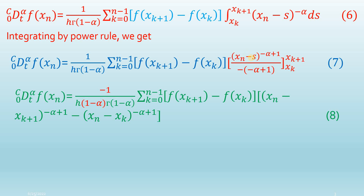The denominator (minus alpha + 1) is taken outside, the minus goes into the numerator, and (1 minus alpha) remains in the denominator. Then I applied the fundamental theorem of calculus: the upper limit x_{k+1} and lower limit x_k are substituted for s, giving equation 8.